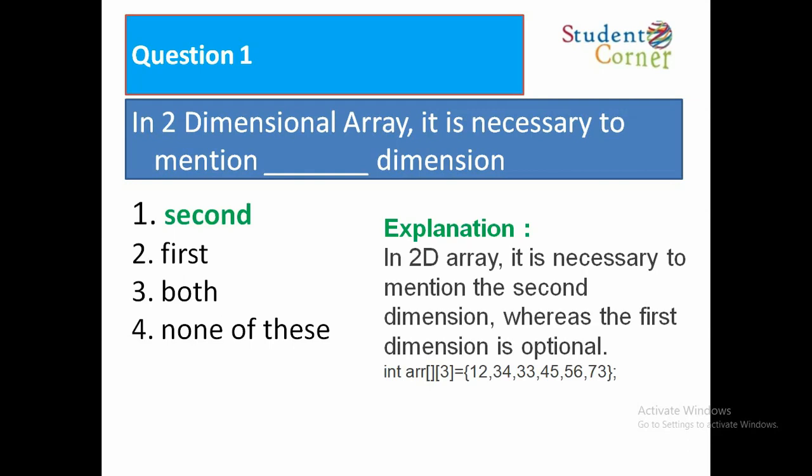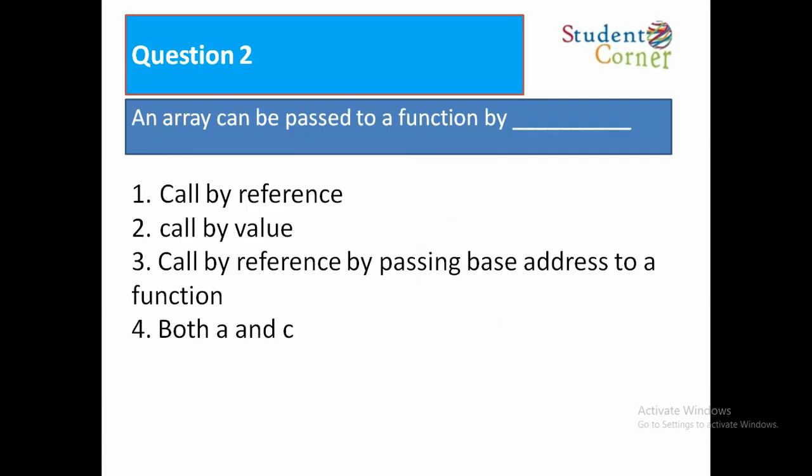In 2D array, it is necessary to mention the second dimension whereas the first dimension is optional. I will give a small example. If you create a table in Excel, the columns are fixed and the rows are infinite. Similarly, the first part contains the row in a two-dimensional array, and second part contains the number of columns. So compulsorily we need to fix number of columns in a two-dimensional array.